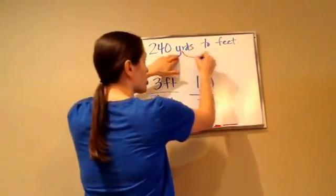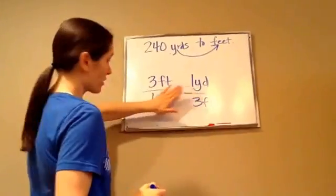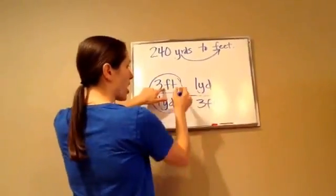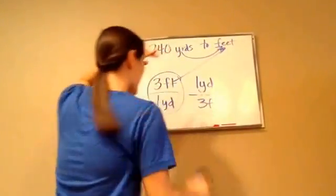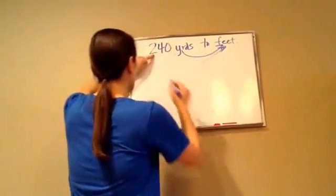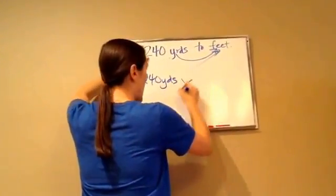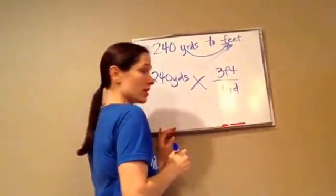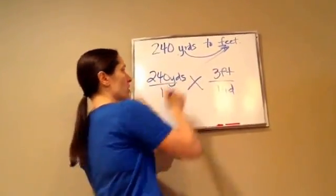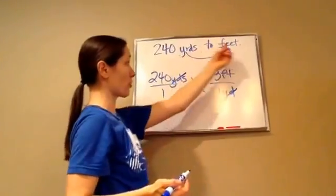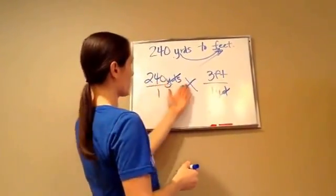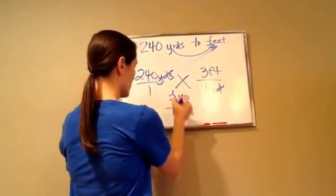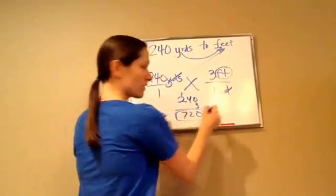If I'm converting yards to feet, which one am I going to use — the first one or the second one? The first one, because it's feet. We always want the one on top to be the one we're converting to. So we take 240 yards times 3 feet over 1 yard. We put this over 1, then cross out our yards — which is good because we don't want yards anymore, we want feet. 240 times 3 is 720 feet. Final answer.